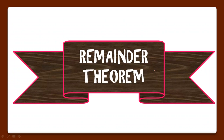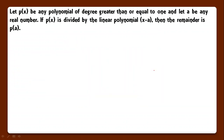Now it's time for understanding the remainder theorem. Here is the statement: let px be any polynomial of degree greater than or equal to 1, and let a be any real number. If px is divided by the linear polynomial x − a, then the remainder is p(a). This is our remainder theorem.